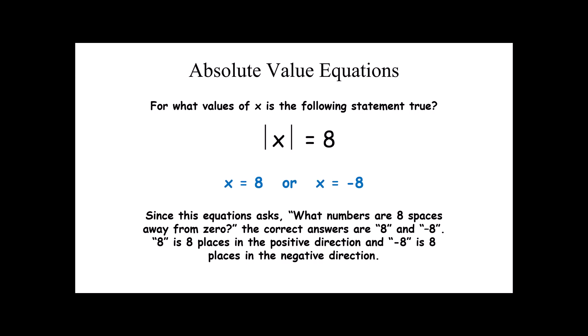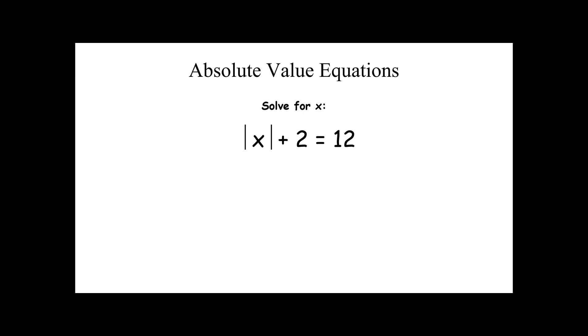Once we understand conceptually what absolute value is, we can turn these into significantly more complex problems. For example, solve this equation for x. Before I can measure the distance from zero, I'm going to have to get rid of this plus 2. I use the additive inverse. That leaves us with absolute value of x equals 10. This question becomes what numbers are 10 spaces away from zero? That's 10 or negative 10.